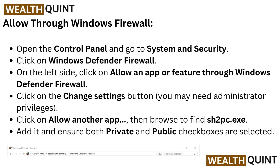To allow the game through Windows Firewall, open the Control Panel and go to System and Security, then click on Windows Defender Firewall. On the left side, click Allow an App or Feature through Windows Defender Firewall. Click the Change Settings button — you may need administrator privileges. Click Allow Another App, browse to find sh2pc.exe, add it, and ensure both private and public checkboxes are selected.